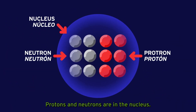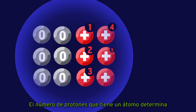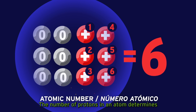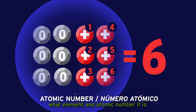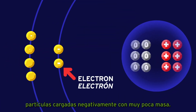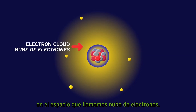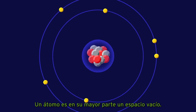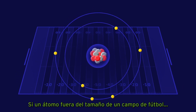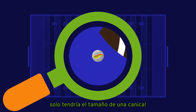Protons and neutrons are located in the nucleus. Protons have a positive charge and neutrons have no charge. The number of protons an atom has determines its identity, or what element it is — this is called the element's atomic number. If you add together the number of protons and neutrons, you get that element's atomic mass. Outside the nucleus are the electrons — negatively charged particles with very little mass. The electrons zoom around really fast in the space we call the electron cloud. An atom is actually mostly empty space. If an atom was the size of a football field, then the nucleus — containing almost all of the atom's mass — would only be about the size of a marble. Now my mind is blown.